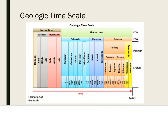The largest subdivision of time on the geologic time scale is an eon — there are only two eons and we are currently in the Phanerozoic eon. Eons are divided into eras; we are currently in the Cenozoic era and there are five eras shown. Eras are divided into periods and epochs. This diagram of the geologic time scale displays time intervals from the oldest on the far left to the most recent on the far right, up until today.